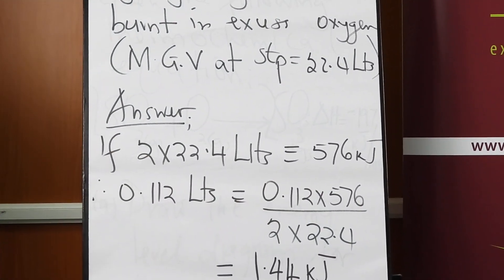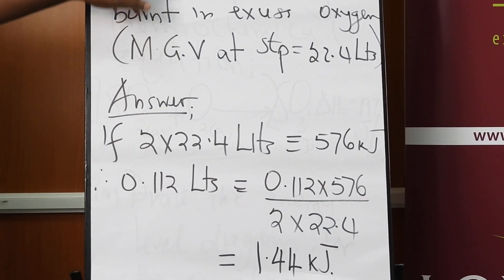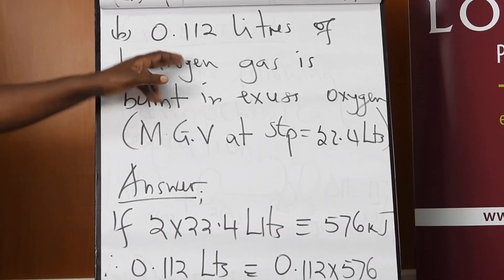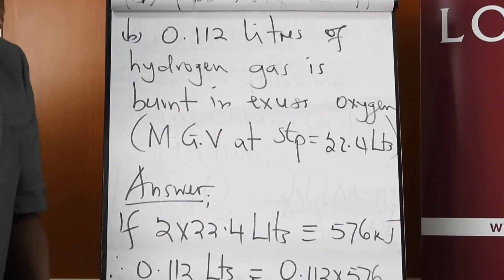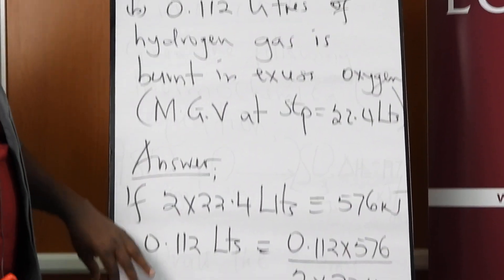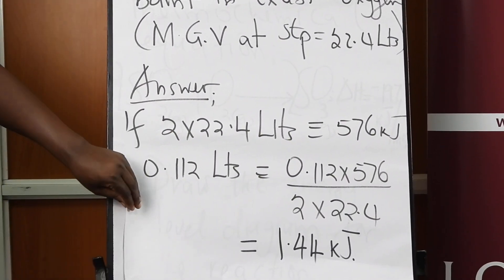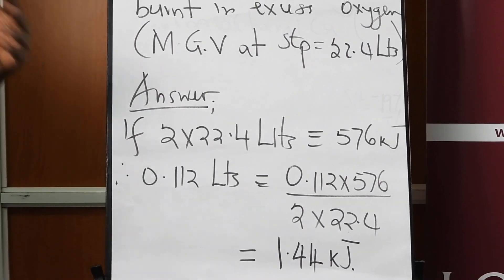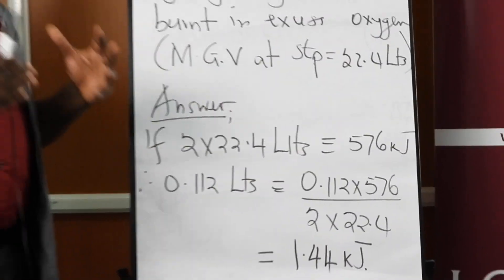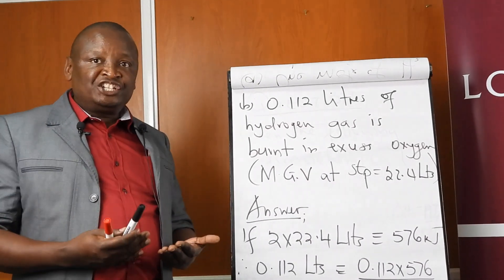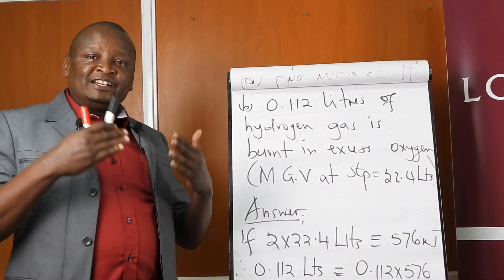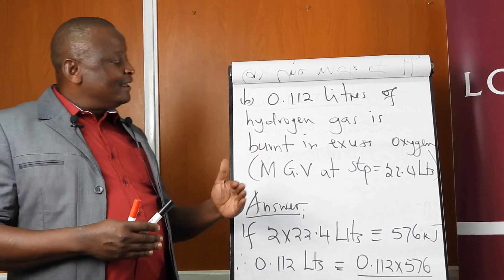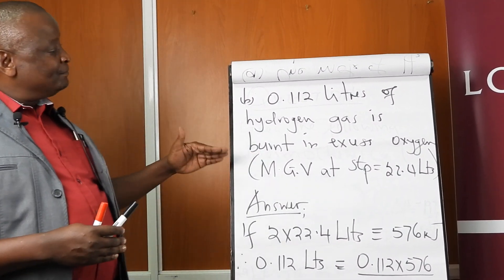So if two times 22.4 litres gives 576 kilojoules, what about the volume required in the question? That calculation gives 1.44 kilojoules. The way we treat normal equations in terms of calculations and interpretation is the same way we treat thermochemical equations.